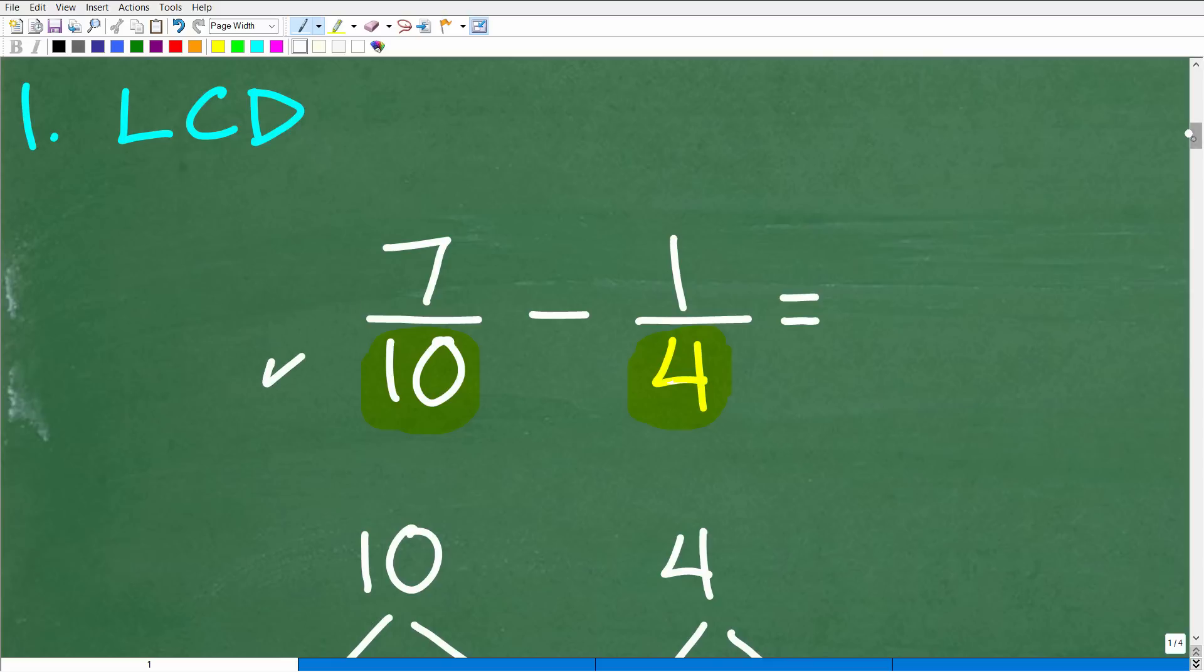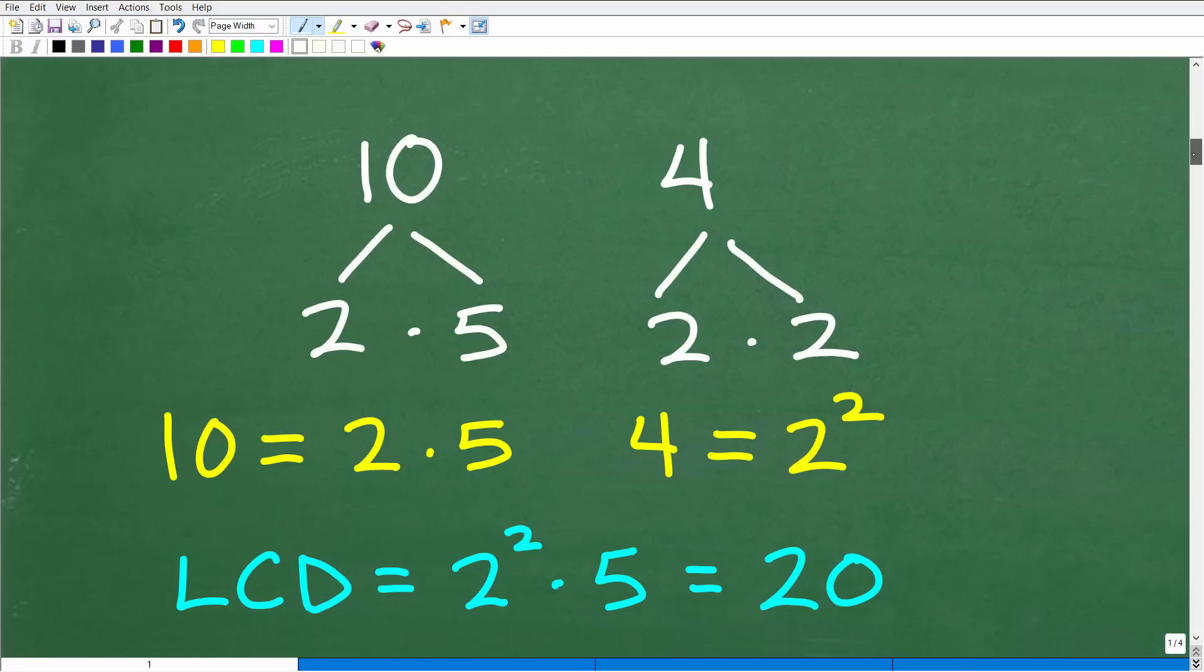If you said the lowest common denominator is 20, that is awesome. We'll give you a nice little happy face for just answering that question because a lot of students struggle with it.